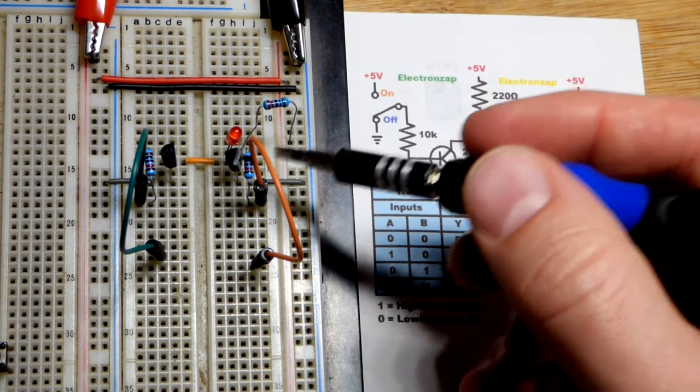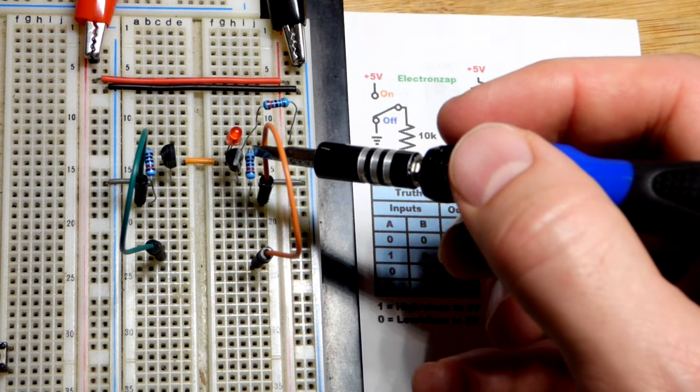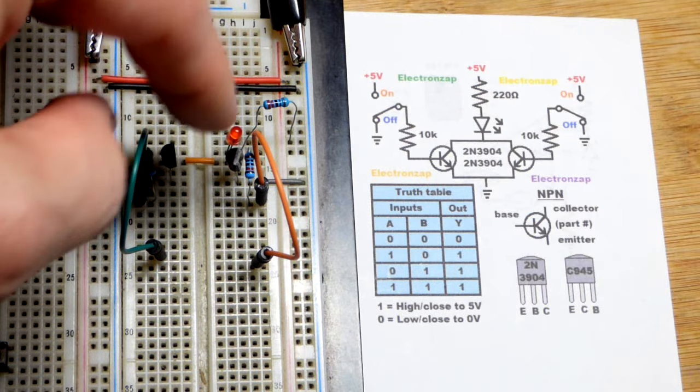Emitter, base, collector. When I turn them to the left, emitter is down below, base is in the middle, and collector is on top.